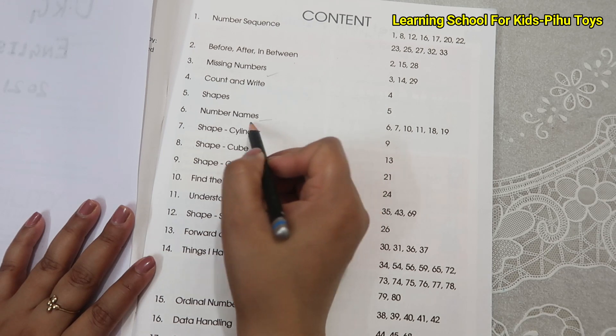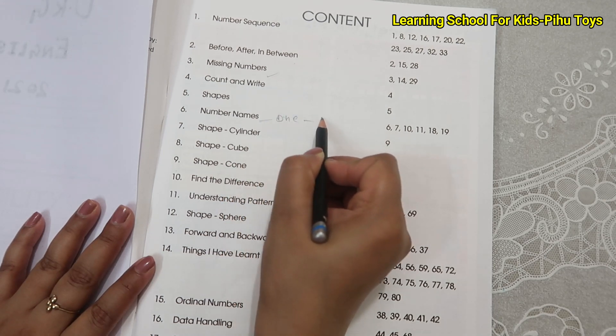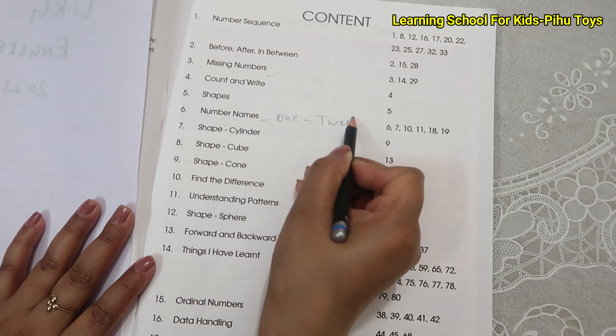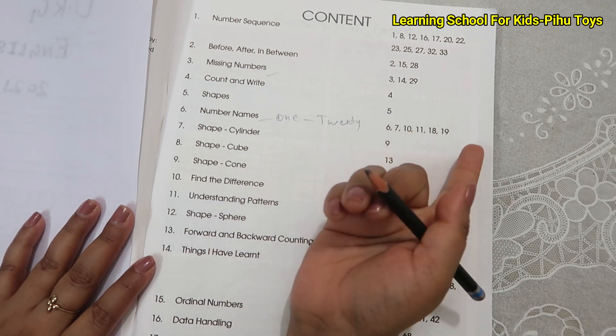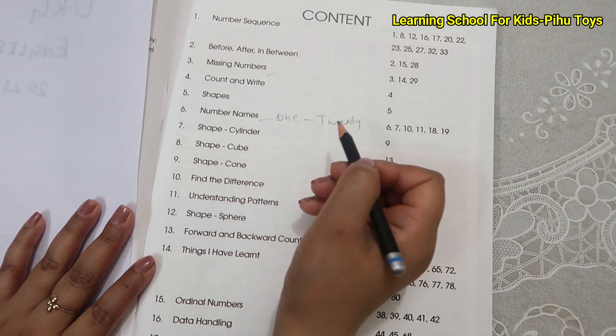Shapes, numbers. In the class, the numbers name is 1 to 50. In the first class, 1 to 20. In the second class, we will start until 50. Then, the shapes we can study.